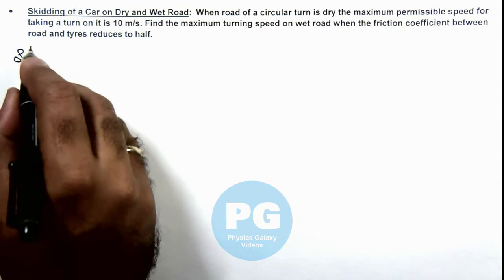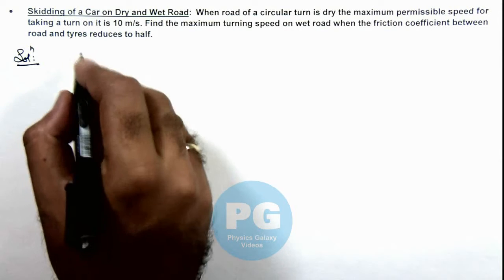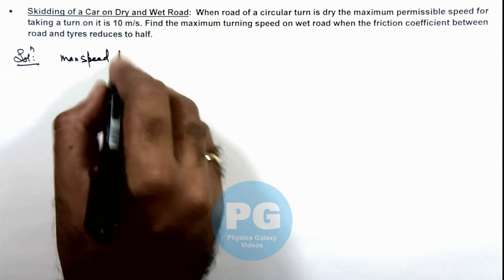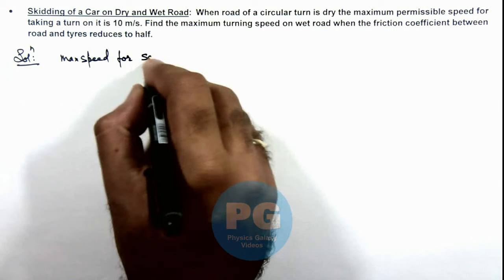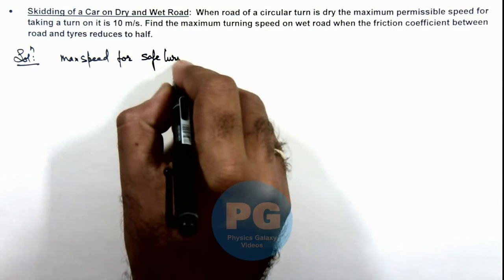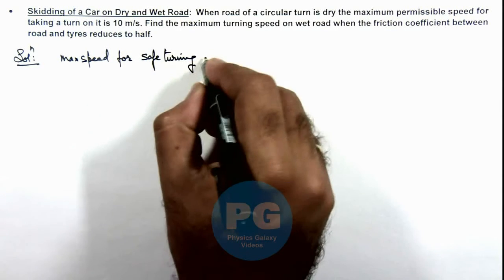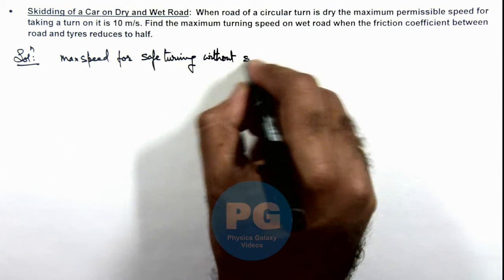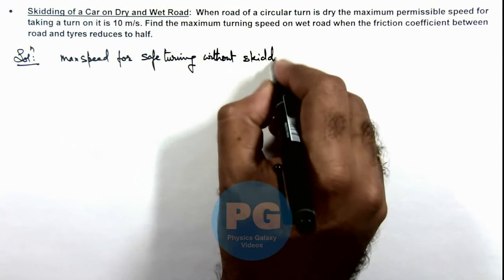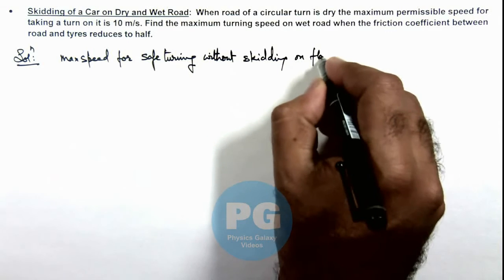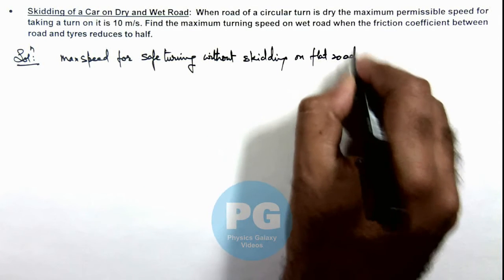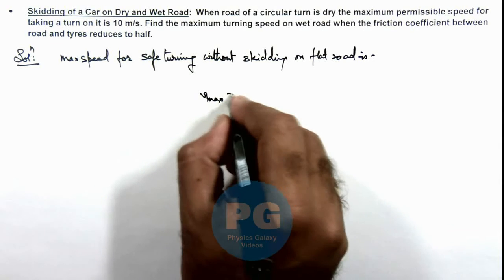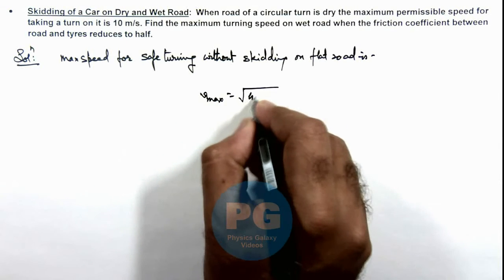We already studied in concept videos that maximum speed for safe turning without skidding on flat road is v_max = √(μrg).